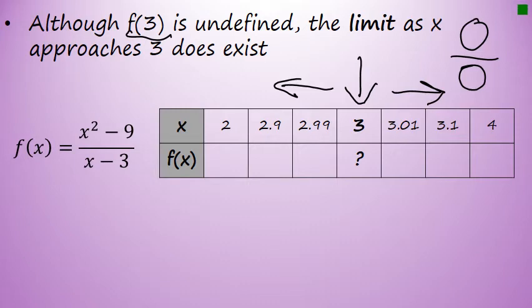Those values are all numbers that are a little bit bigger than 3, and realize that all of these numbers are part of the domain of f(x). If I evaluate f(2) or f(2.9) or f(2.99), those values will all exist because the domain of f(x) is all numbers except 3. What we hope to see when we complete this table is a pattern—a pattern that shows that although f(3) doesn't exist, the function is approaching a certain value.